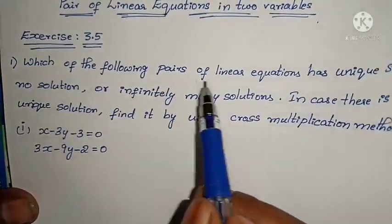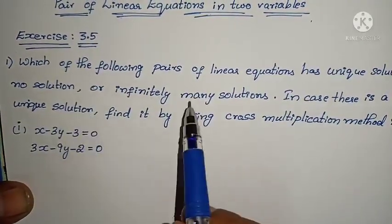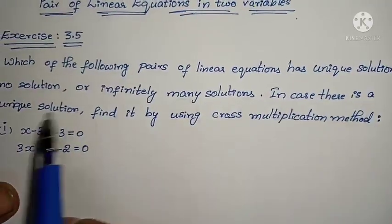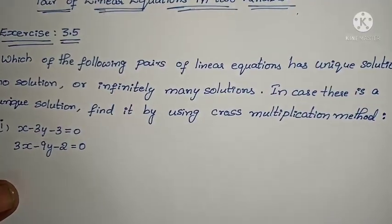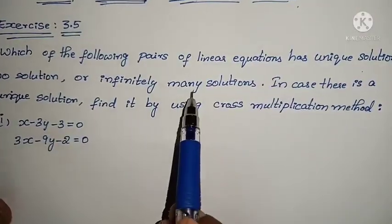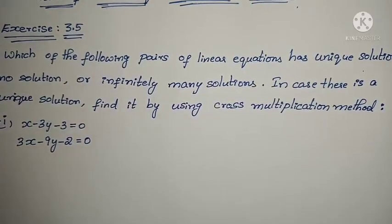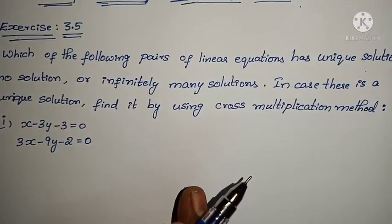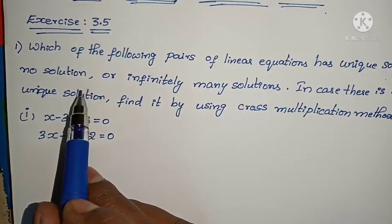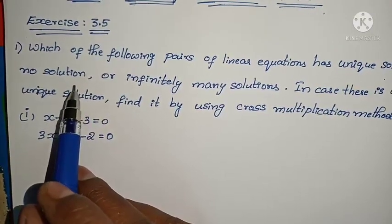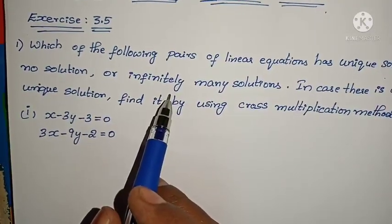See the question they have given: which of the following pairs of linear equations has unique solution, no solution, or infinitely many solutions? In case there is a unique solution, find it by using cross multiplication method. We already know when it becomes unique solution, no solution, and infinitely many solutions. If A1/A2 is not equal to B1/B2, then we have a unique solution. No solution means A1/A2 equals B1/B2 and not equals to C1/C2. If all are equal, there will be infinitely many solutions.